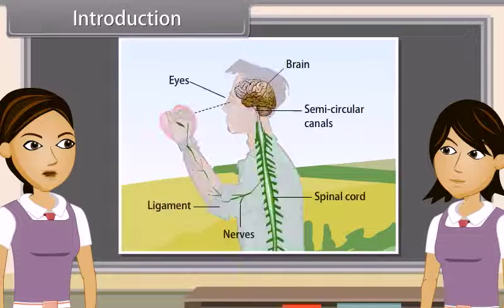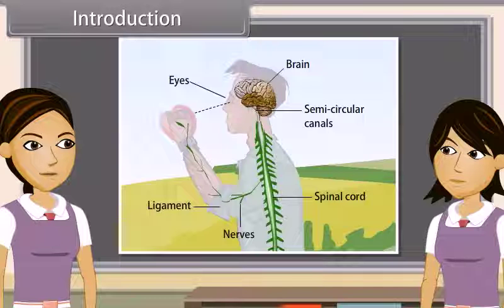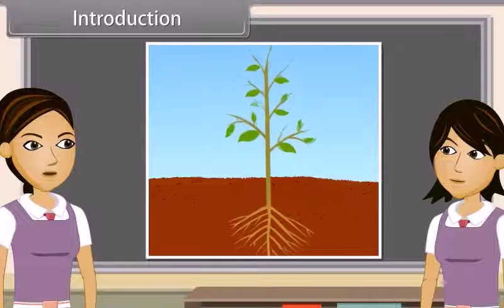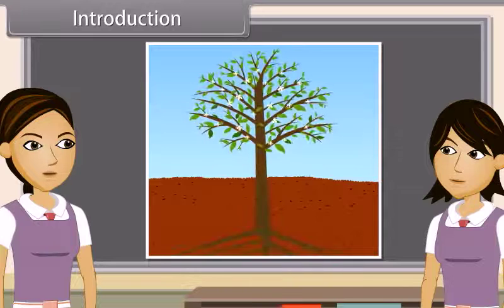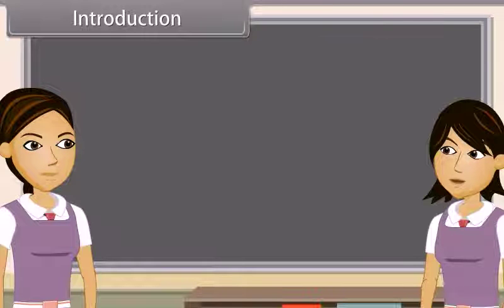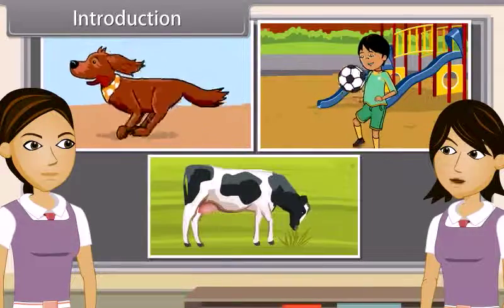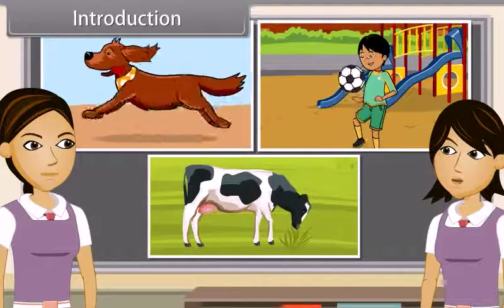Coordination is the working together of the various organs in a systematic manner, so as to produce a proper reaction to the stimulus. Something is called living when a movement is observed in it. This movement can be due to growth, as in plants where a seed germinates and grows. This movement in plants stops after a particular time. In animals and some plants, these movements are not connected with growth.